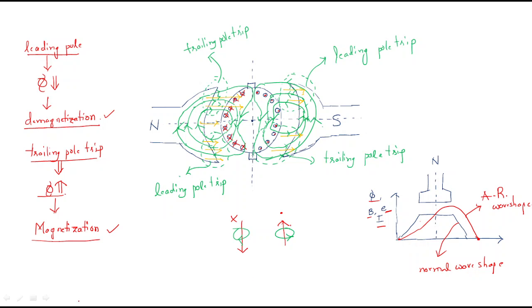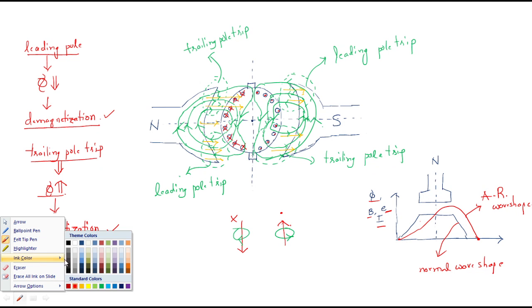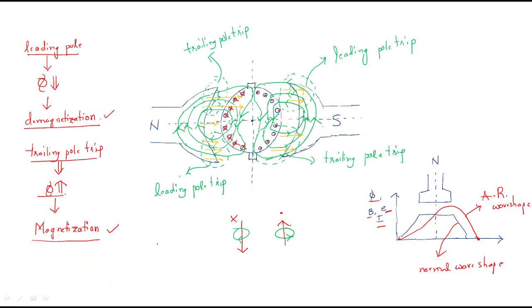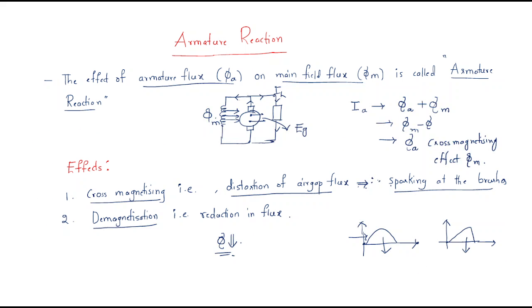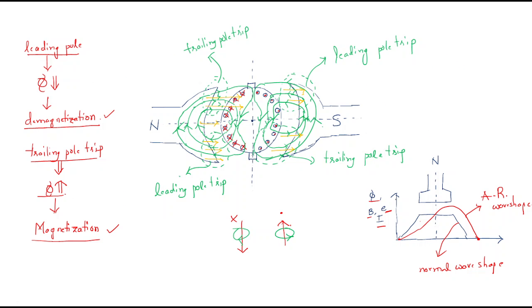In conclusion, whenever armature reaction is discussed, both demagnetization and magnetization are possible. This means armature reaction sometimes adds flux and sometimes decreases flux. This is an introduction and analysis of armature reaction. I hope all of you understood the session, thank you.